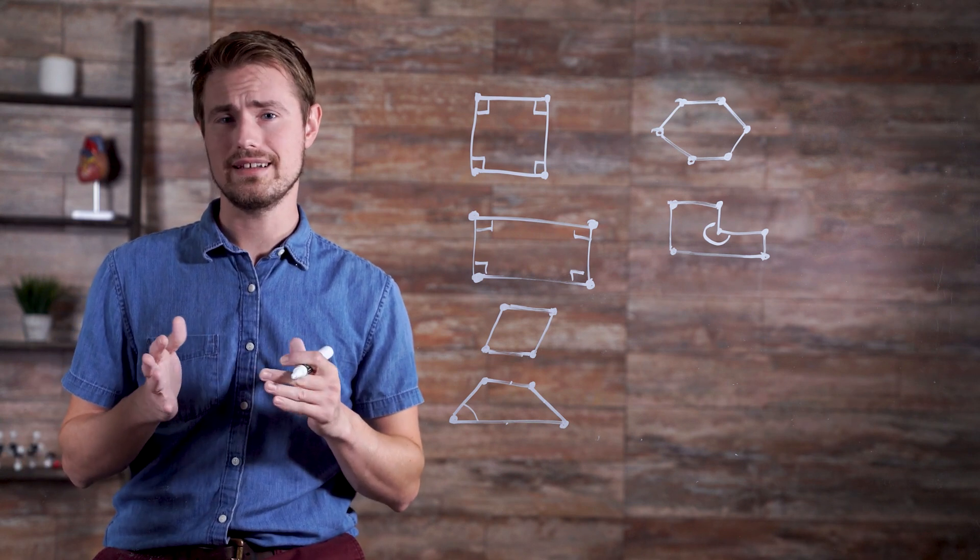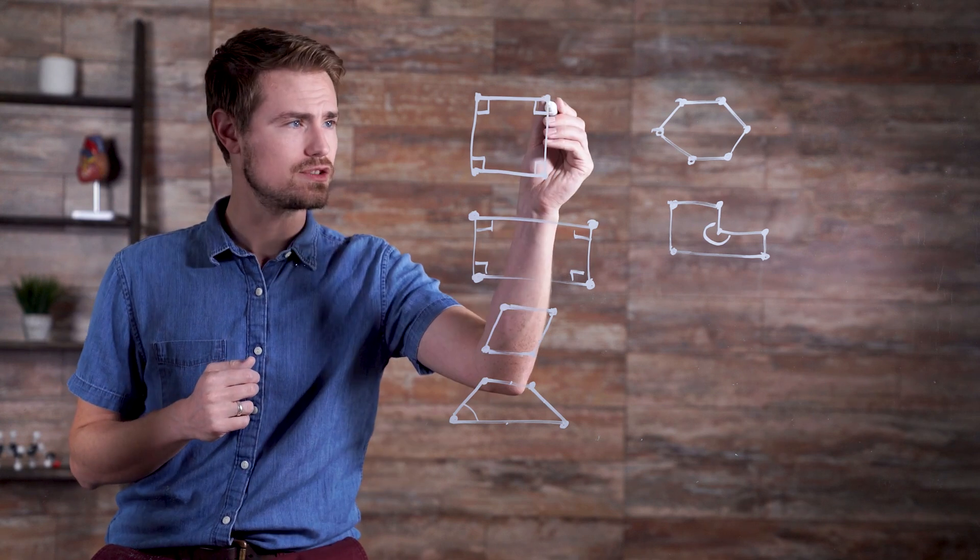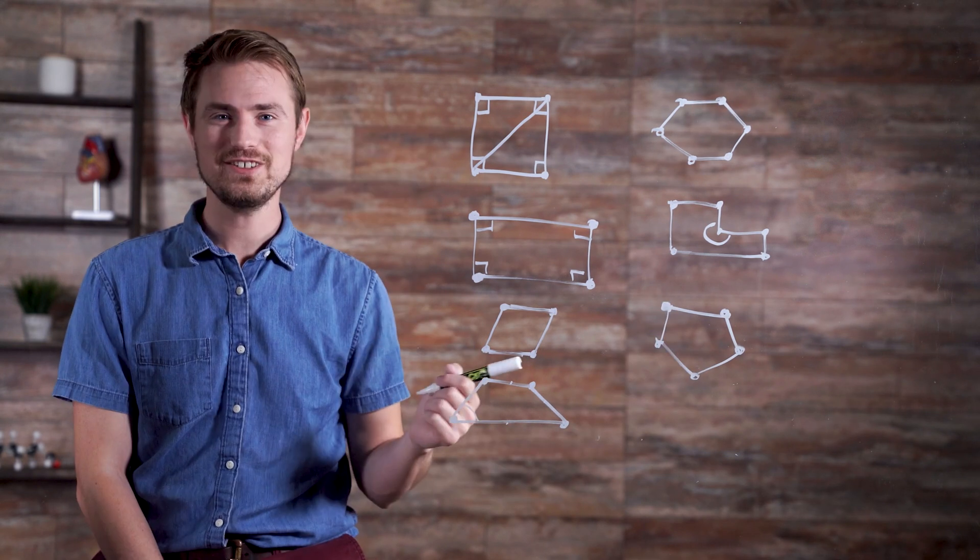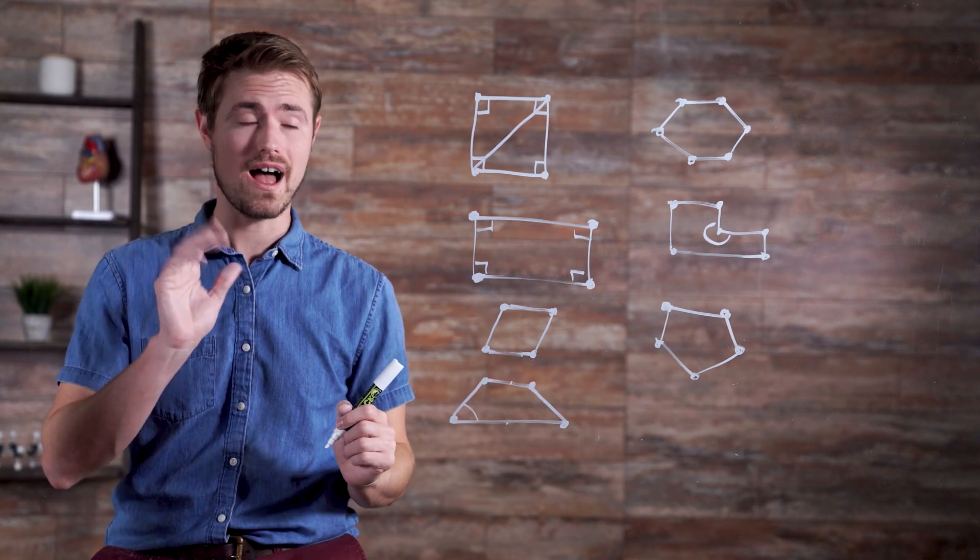Polygons also contain diagonals. Diagonals are line segments joining two vertices that are not next to each other. As you can see here, this irregular convex pentagon has five diagonals.